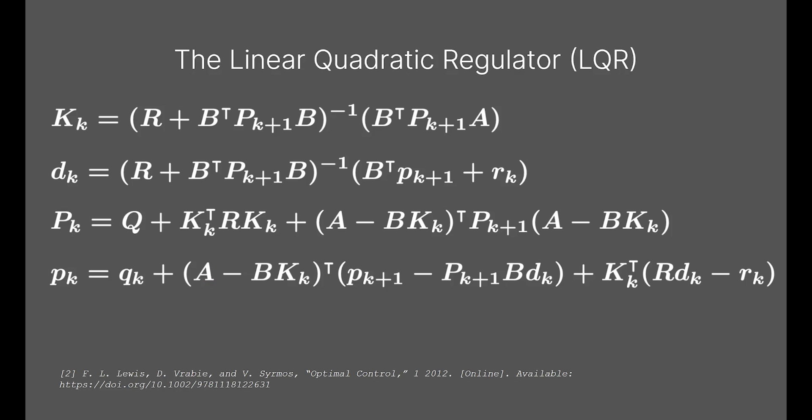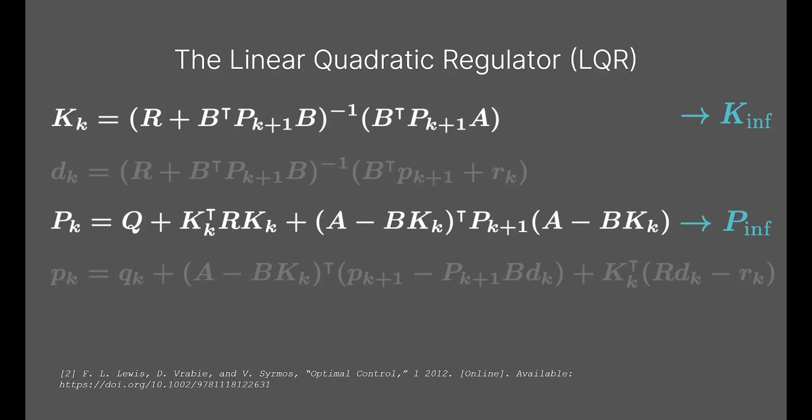Given a long enough horizon, the Riccati equations converge to the solution of the infinite horizon LQR problem, which is a single gain matrix K infinity and cost-to-go Hessian P infinity. We save on memory by caching just these two matrices instead of the entire horizon of K's and P's.